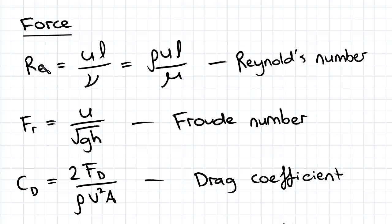This here is Reynolds number, which is velocity times length on kinematic viscosity, or rho UL on mu.